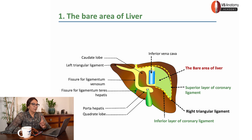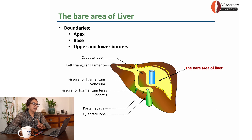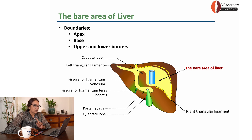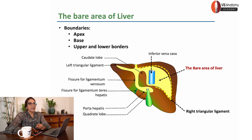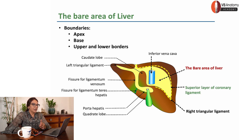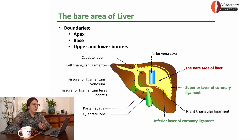Let's define its boundaries. Apex formed by right triangular ligament. Base formed by groove for inferior vena cava. Upper and lower borders formed by superior layer of coronary ligament and inferior layer of coronary ligament. Very easy.